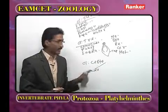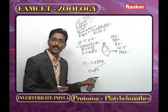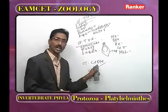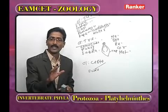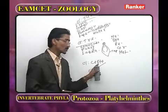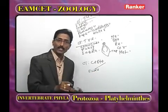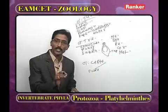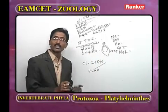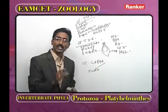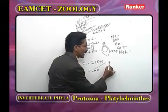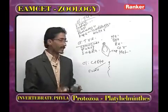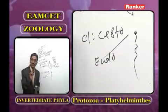The last class is Cestoda — all are endoparasites with no alimentary canal. The body appears tape- or ribbon-like, so they are called tapeworms, intestinal parasites. The body is covered by syncytial tegument. Body parts are: scolex, neck, and strobila. Strobila is divided into proglottids; all are bisexual. Only in Cestoda is pseudometamerism observed — new segments added from the anterior end.